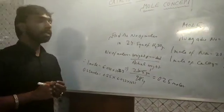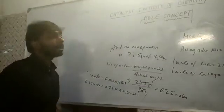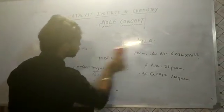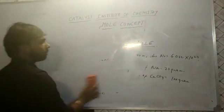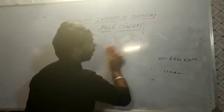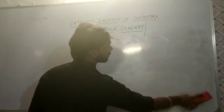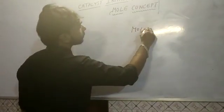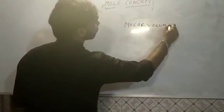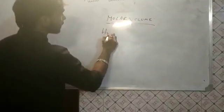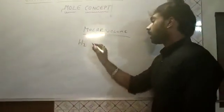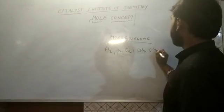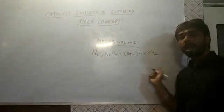Next we discuss molar volume — the volume occupied by 1 mole of any gas at STP. Consider gases such as H2, O2, Cl2, CH4, CO2, and SO2. Their molecular weights are: hydrogen 2 grams, oxygen 32 grams, chlorine 71 grams, methane 16 grams, CO2 44 grams, and SO2 64 grams.